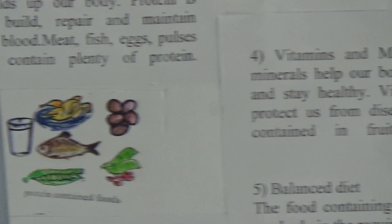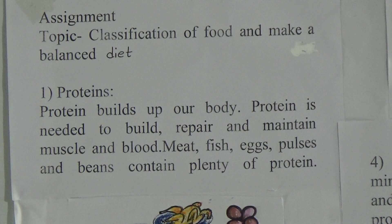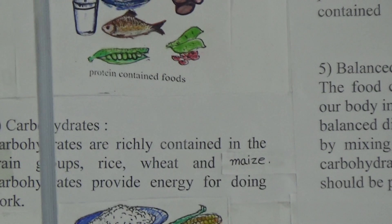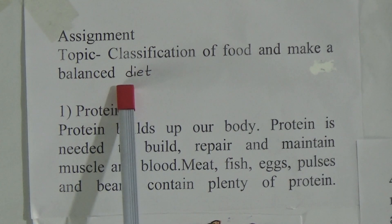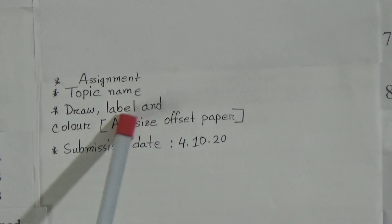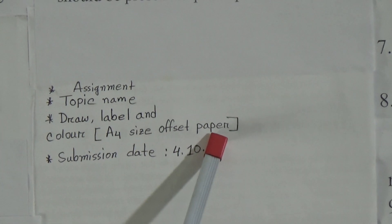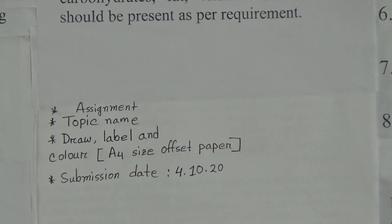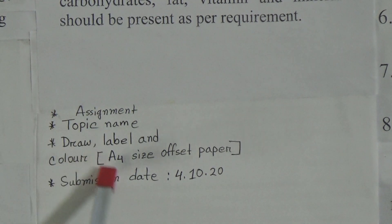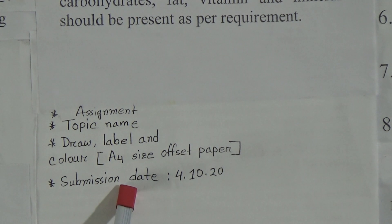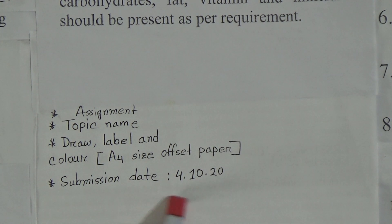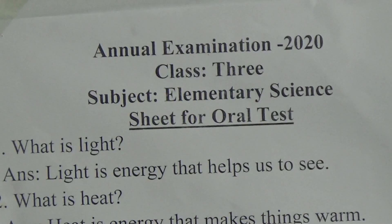Write 'assignment' on top of the page and write the topic name clearly. The topic name is: classification of food and make a balanced diet. Draw, label, and color on A4 size offset paper — you can use one or more sheets for this assignment. The submission date of this assignment is 4/10/20.